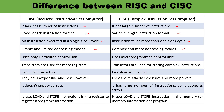RISC uses a hardwired control unit while CISC uses a microprogrammed control unit. Since RISC uses a hardwired control unit, there is no flexibility. CISC, however, has flexibility because it uses a microprogrammed control unit.